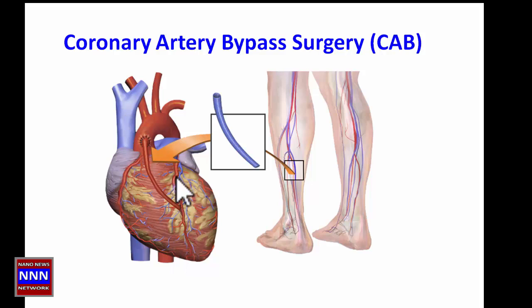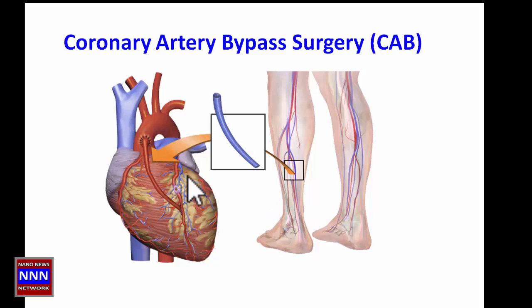Whenever there is a blockage in a segment of an artery, there is reduced blood supply to the heart muscle. When multiple arteries are blocked, patients come in with chest pain. After doing diagnostic tests such as nuclear stress tests or cardiac catheterization, we can determine where the blockages are. If the patient has multiple extensive blockages, that patient is generally recommended for coronary artery bypass surgery.